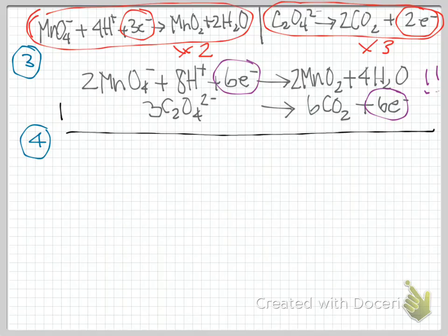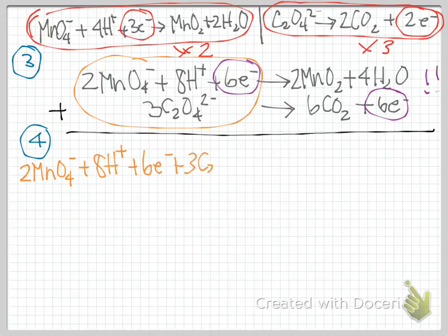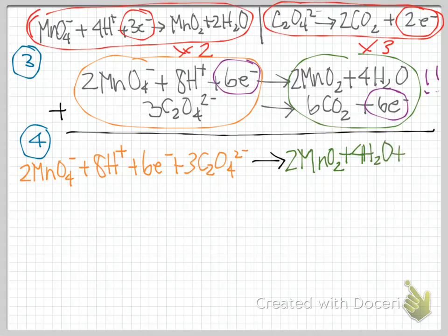So what we're going to do next, step four, is add and simplify. We add these two together. I'm just adding everything on the left in orange, so the left side of the arrow, everything on the right in green. And then we simplify. We see those six electrons, I'm going to erase them, they cancel out. And that means we did our job right. Well, if this was in an acidic solution, we'd be done.